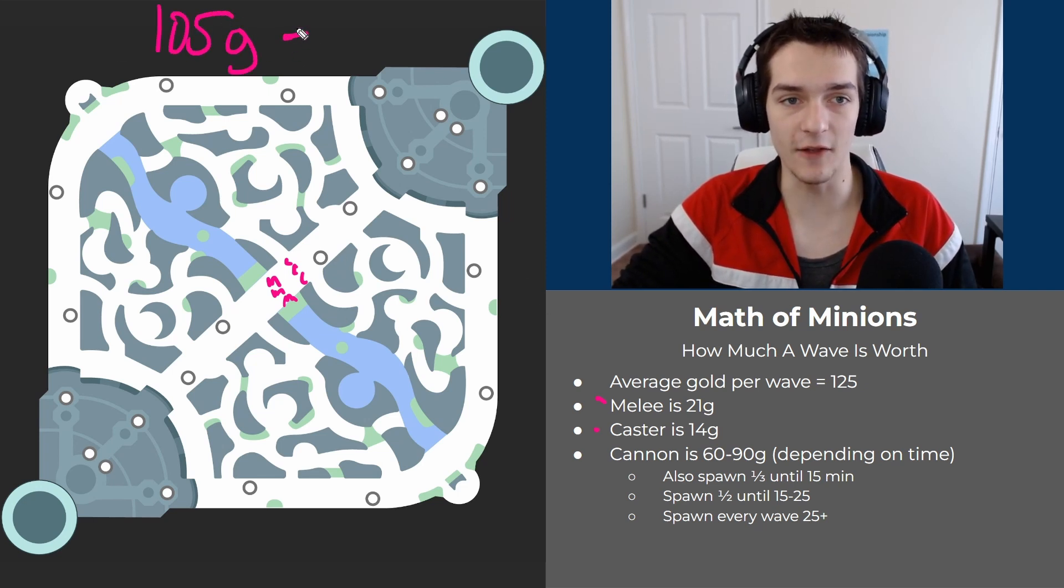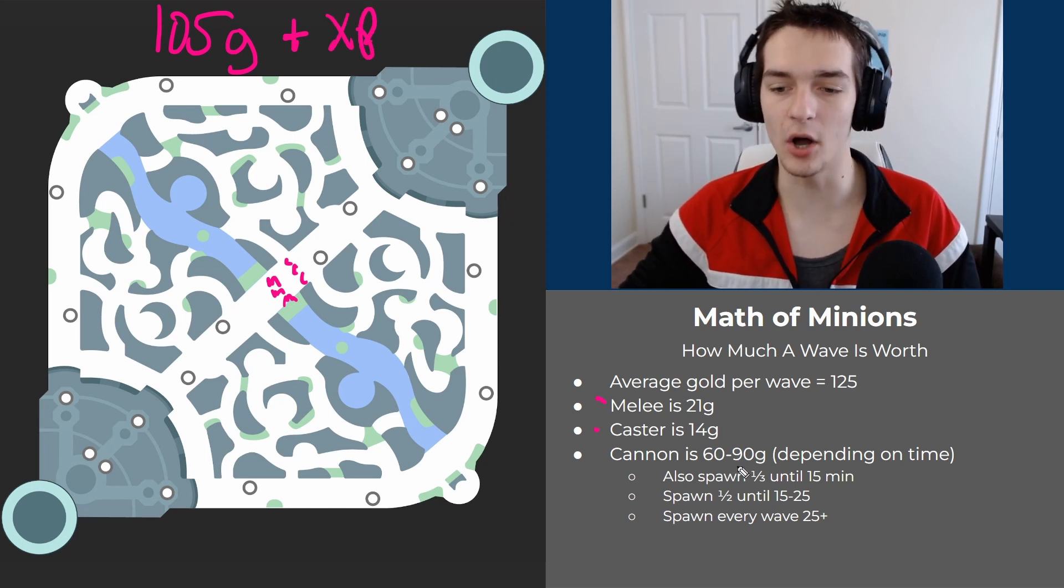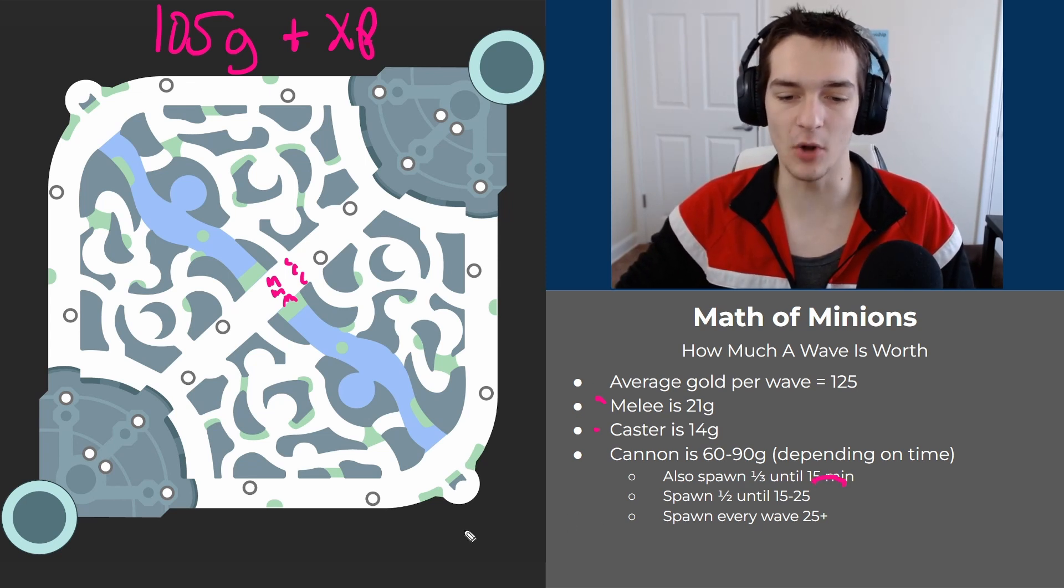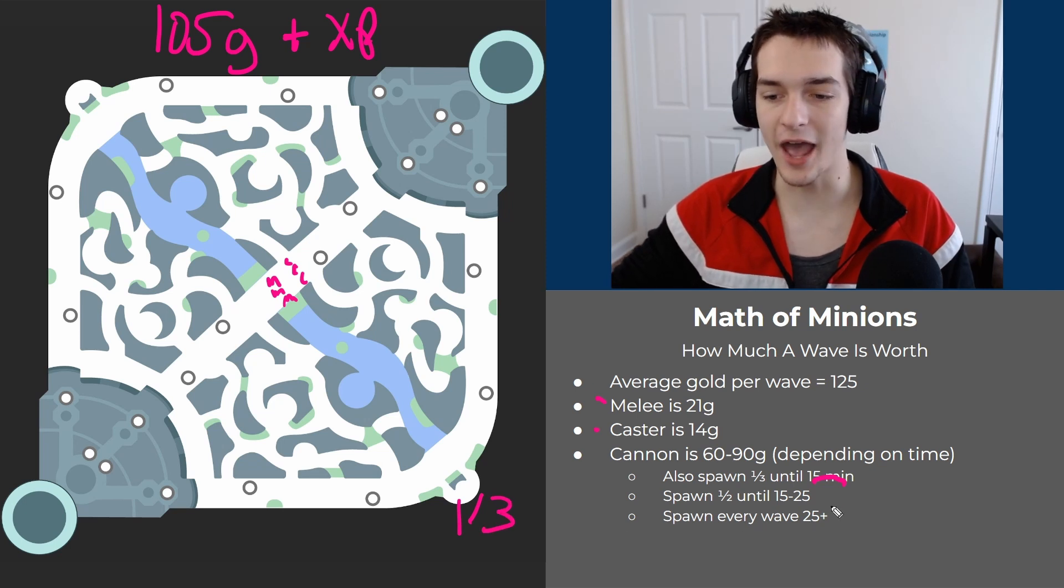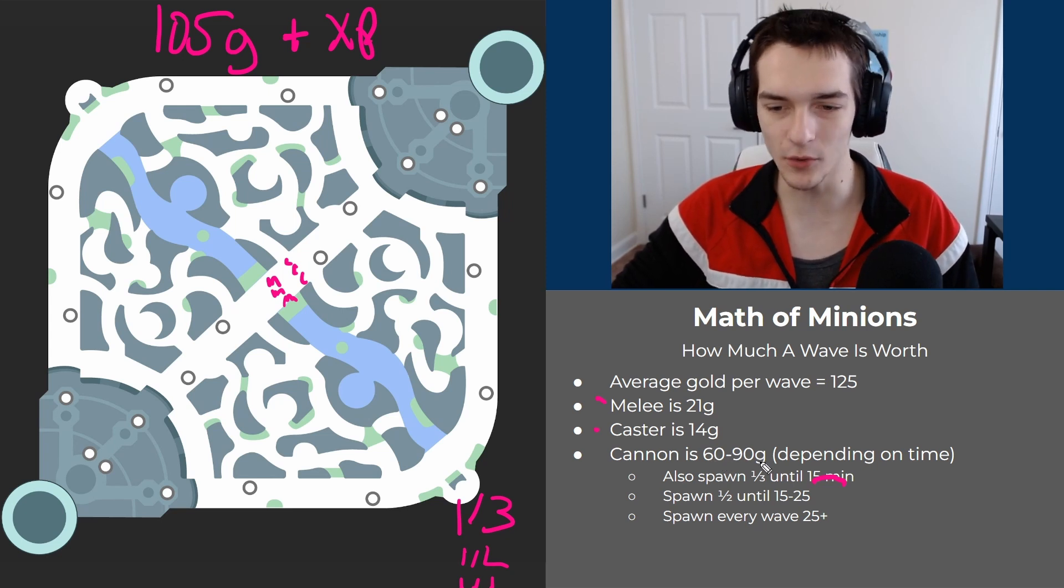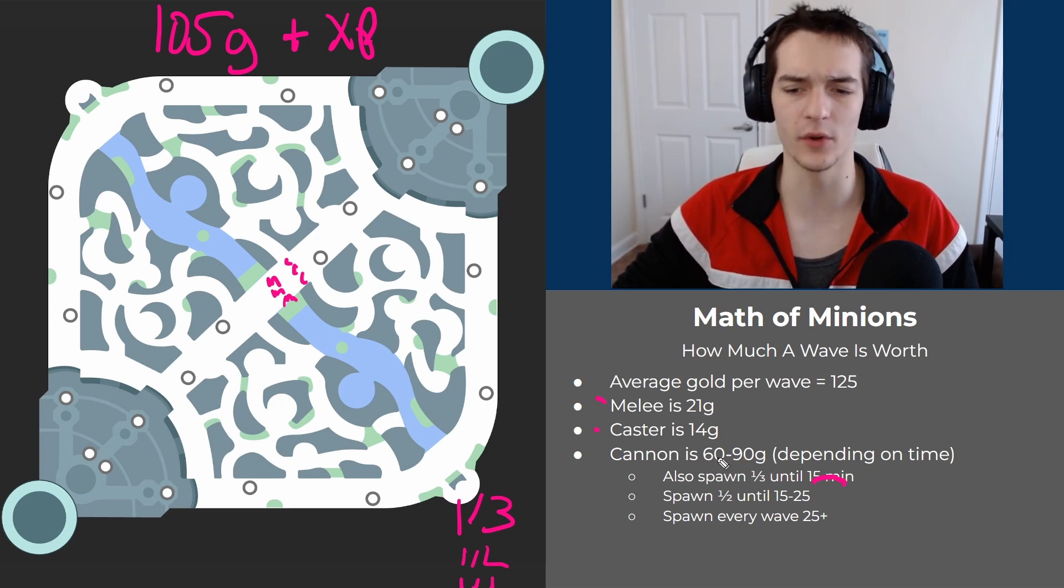Cannons spawn for the first 15 minutes of the game one every three waves. From 15 minutes to 25 minutes they spawn every other wave, and past 25 minutes they spawn every wave. Their gold is also variable, going anywhere from 60 gold to 90 gold. In mid lane they're worth 10 less for the first 14 minutes of the game.